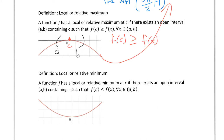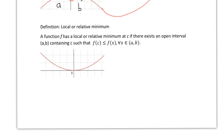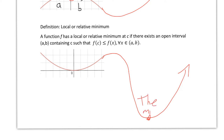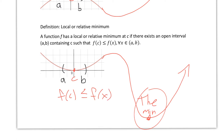The definition of a local or relative minimum is very similar — just switch the direction of the inequality so f(c) ≤ f(x) for all x in (a, b). Looking at a graph with a little valley, this lowest point looks like the minimum in its neighborhood. Even if the graph does something lower elsewhere, that doesn't matter — we just need a small interval (a, b) where this point c has the smallest y-value, making f(c) the local minimum.